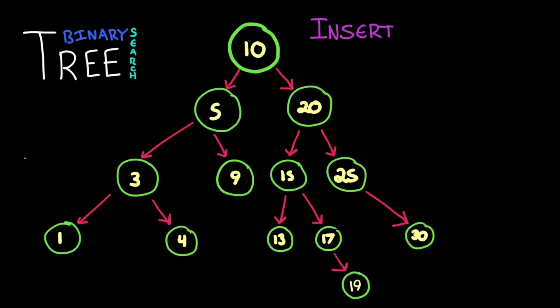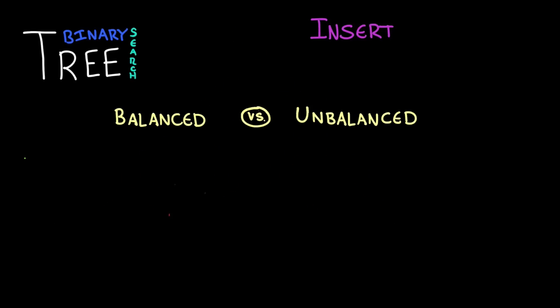Now the one problem here is that if we get elements in a particular order we could get really imbalanced. Suppose we have a new binary search tree and we just follow the properties of insertion. So we insert one and then two to its right and then three to its right and four to its right. We're gonna get this data structure that looks less like a tree and more like a long list. And then inserts and finds will no longer be so fast.